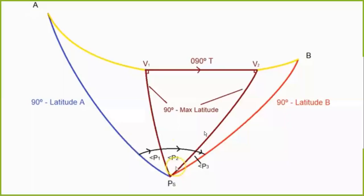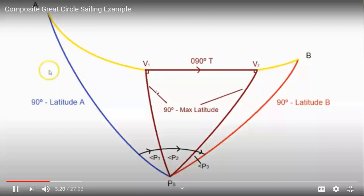Therefore we have three triangles: A-P-V1, V1-P-V2, and V2-P-B, and we have three angles P1, P2, and P3.